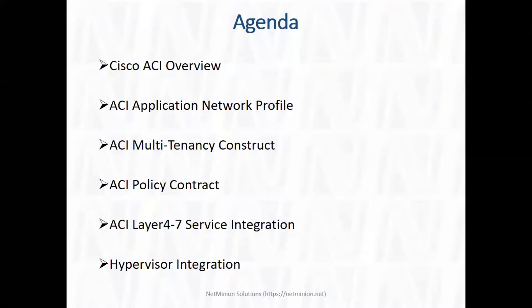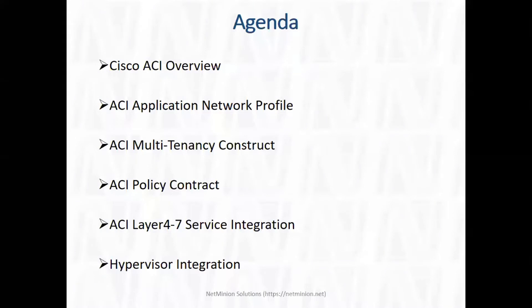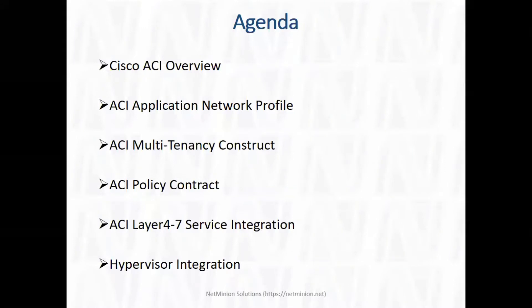We'll cover all those points in both lab and concept — things you'd commonly do in production. We'll discuss all logical and physical constructs. Physical constructs include interface policy, interface policy group, interface profile, switch policy, switch policy group, and switch profile. Logical constructs include tenant, VRF, bridge domain, subnets, advertisement, application profile, EPG, contract, preferred group, and VMware VMM integration.